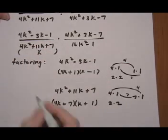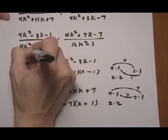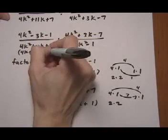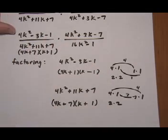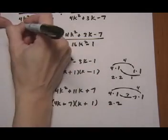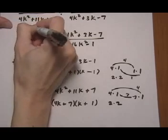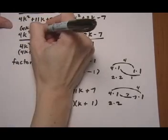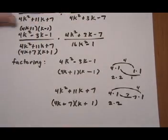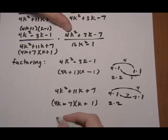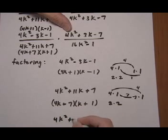So I'm going to replace this guy by 4k plus 7, k plus 1, and the top left was 4k plus 1, k minus 1. All right, so let's keep going. 4k squared plus 3k minus 7 for the top right.